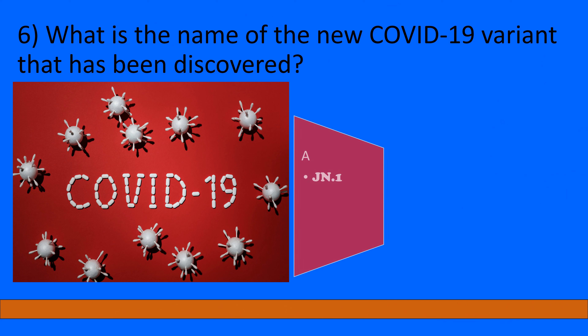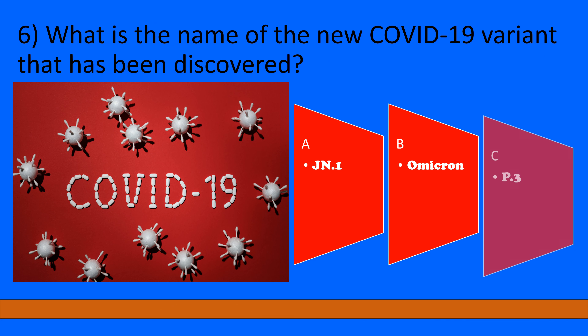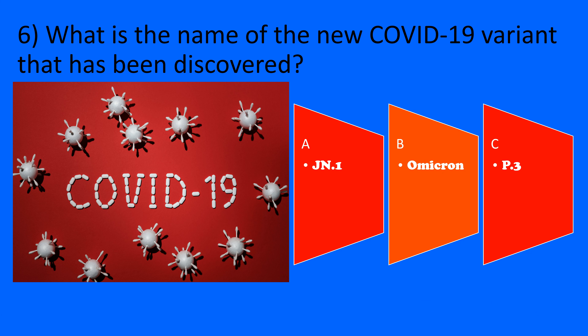What is the name of the new Covid-19 variant that has been discovered? A: JN1, B: Omicron, C: P3. The correct option is B, Omicron.